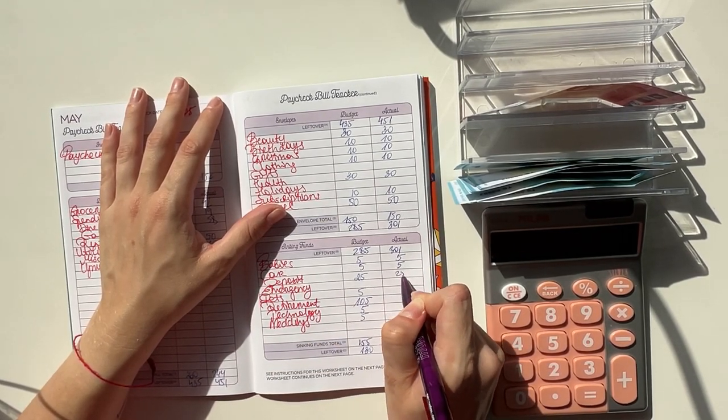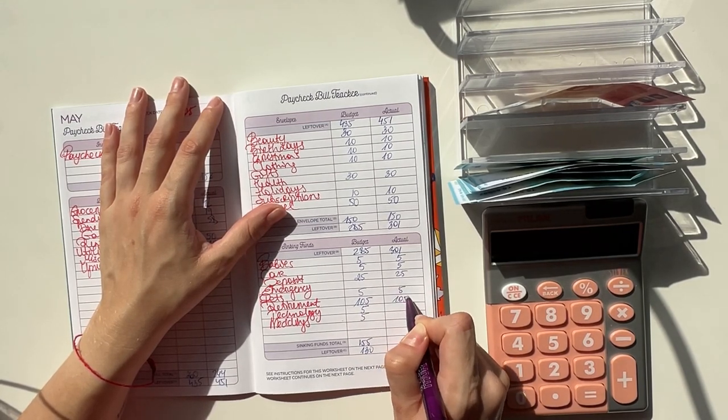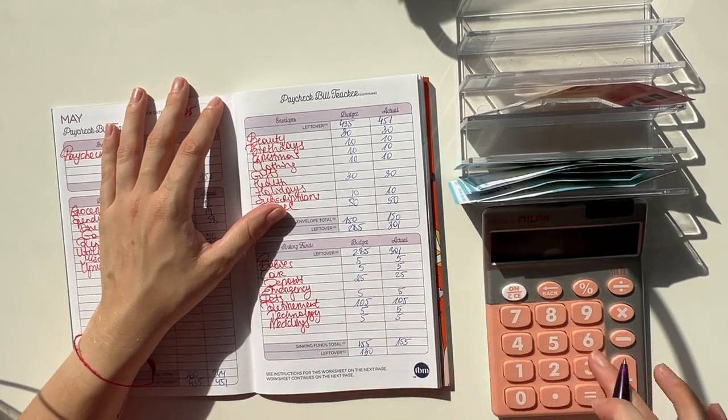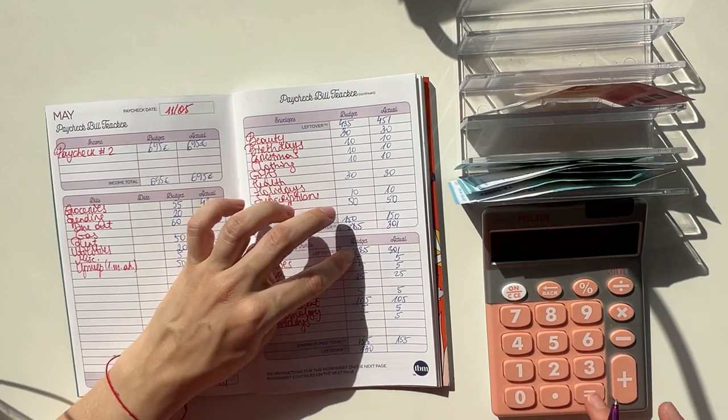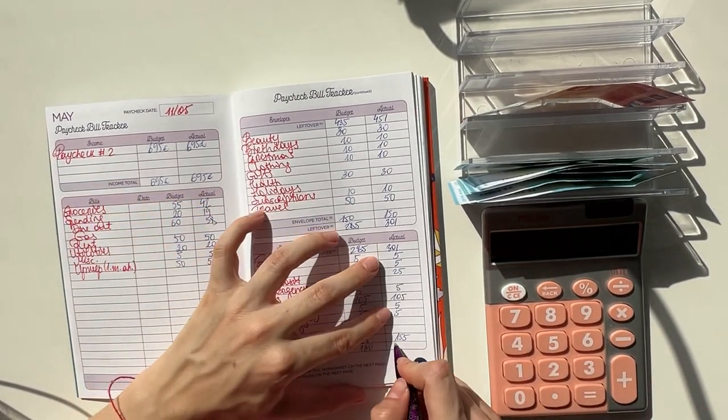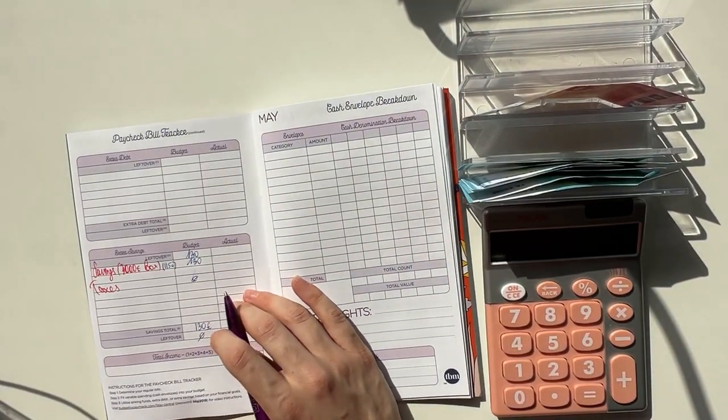Long-term sinking funds - babies got 5, car got 5, deposit 25, pets got 5, retirement 105, technology and weddings also each 5. That was 155, so 301 minus 155 is 146.